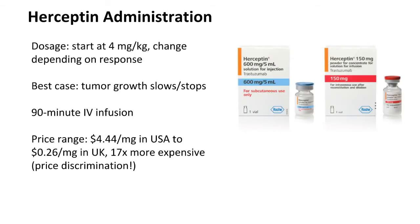Herceptin is administered with an initial dosage of 4 milligrams per kilogram, and depending on how a patient responds, an oncologist will vary the dosage accordingly. The best case with Herceptin is that the tumor growth will stop or slow down. This is because Herceptin is an antibody that will bind to the HER2 receptors on cells. These HER2 receptors are where hormones interact with cells in order to allow them to grow and divide, and on certain cancers we have an excess amount of HER2 receptors.